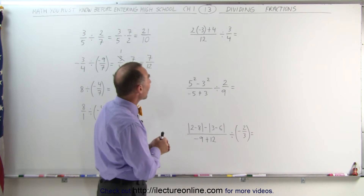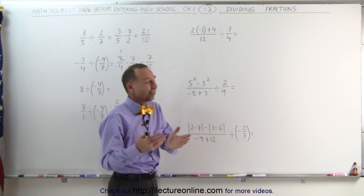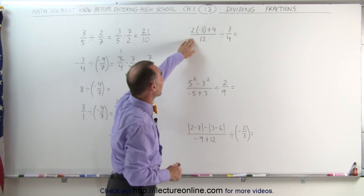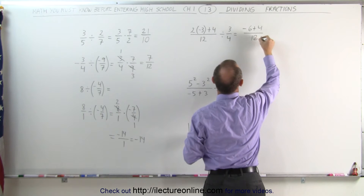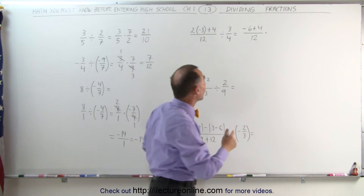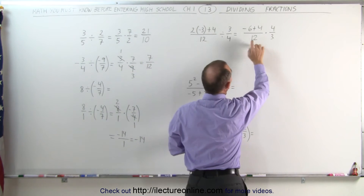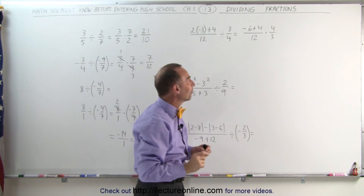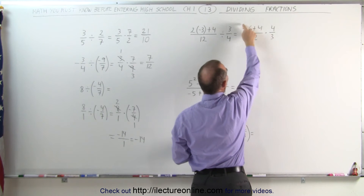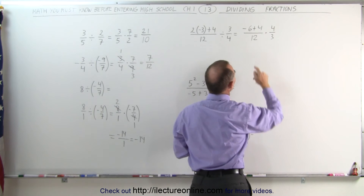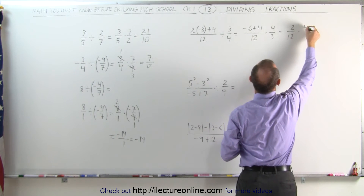On the next problem, notice we have some complications. The left fraction is somewhat complicated, and we have to simplify it first before doing the division — which is multiplying by the inverse of the second fraction. We have 2 times negative 3, which becomes negative 6, plus 4, divided by 12. Now we multiply by the inverse of the second fraction: times 4 divided by 3. You might be tempted to simplify the 6 and 12, but you cannot do that — whenever there is addition or subtraction in the numerator, you must simplify those terms first. Minus 6 plus 4 is negative 2, divided by 12, multiplied by 4 divided by 3.